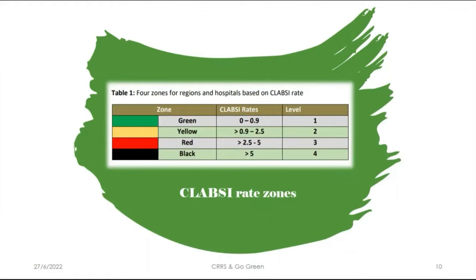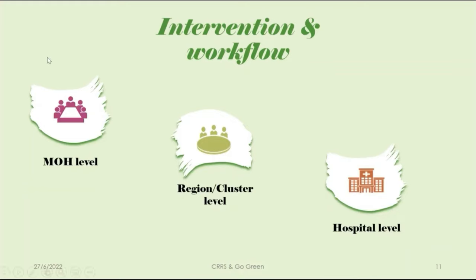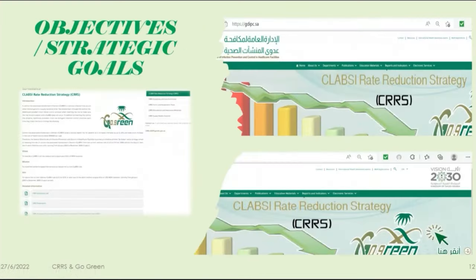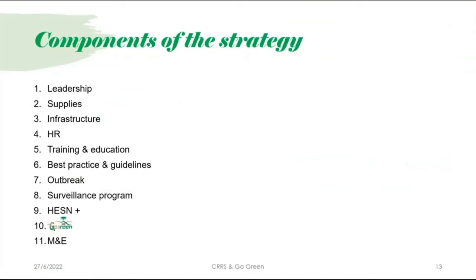The rates are divided into different zones — green, yellow, red, and black — and the level of intervention is based on these zones. Intervention operates on three levels: MOH level, regional and cluster level, and hospital level. All details of the strategy and components are available on the GDIPC website at gdipc.sa. The strategy has 11 components in total, with full details including the vision, mission, aim, and toolkit available on the website.